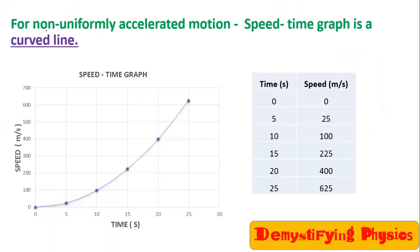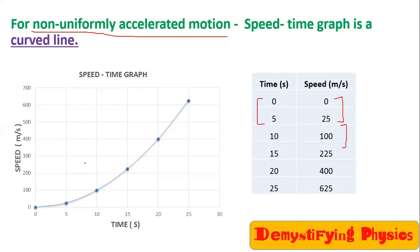For non-uniformly accelerated motion, velocity changes by unequal amounts in equal intervals of time. In this example, in every 5 seconds the speed is changing by unequal amounts. When you plot this data, you get a curved line.